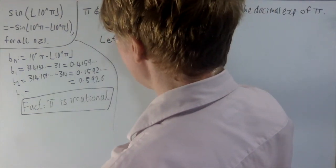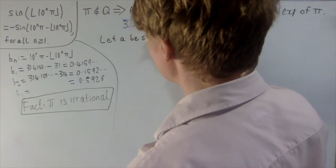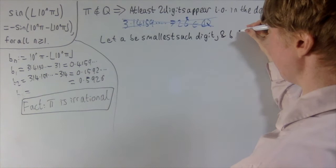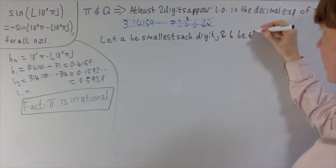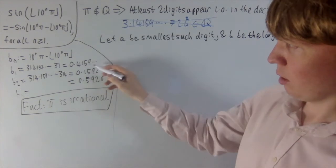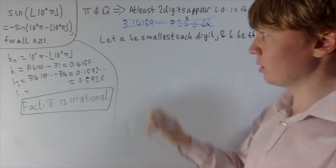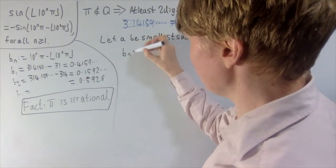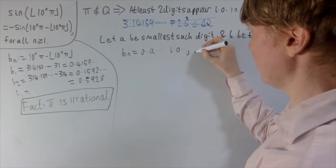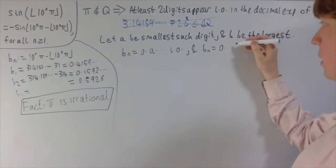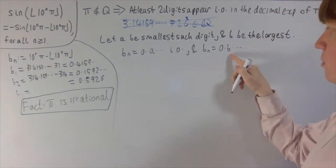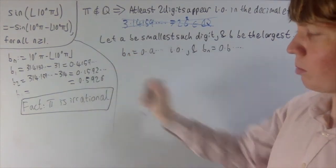Let a be the smallest digit appearing infinitely often in π's decimal expansion, and b be the largest such digit. If a appears infinitely often, then infinitely often bₙ = 0.a followed by some other digits. Since b also appears infinitely often, we also have infinitely often bₙ = 0.b followed by some digits — for example if b = 9, you'd always have 0.9-something cycling through.